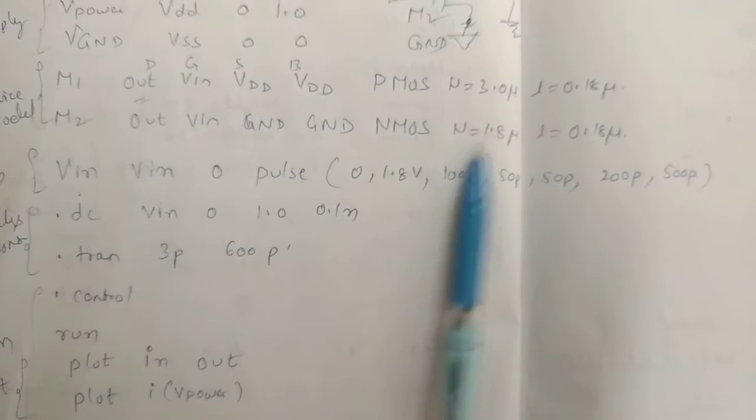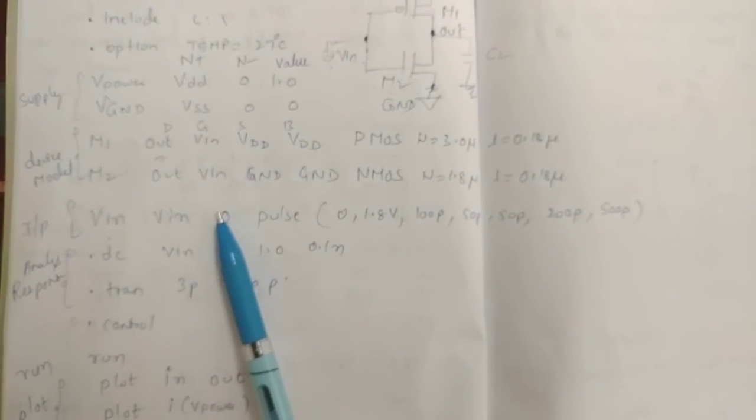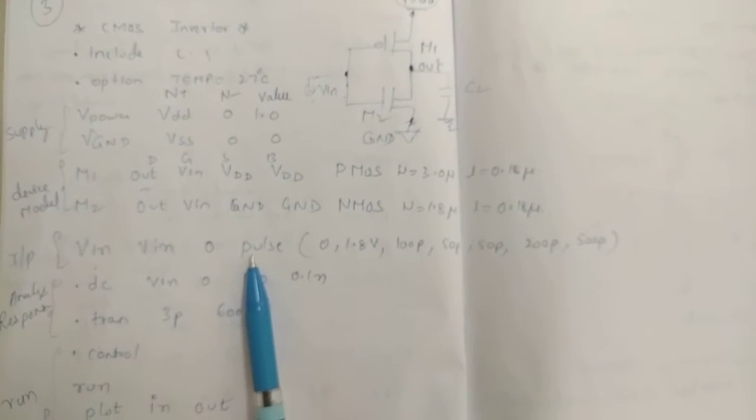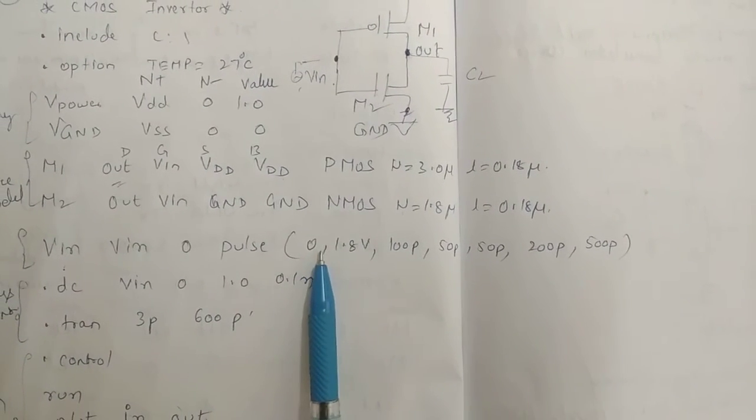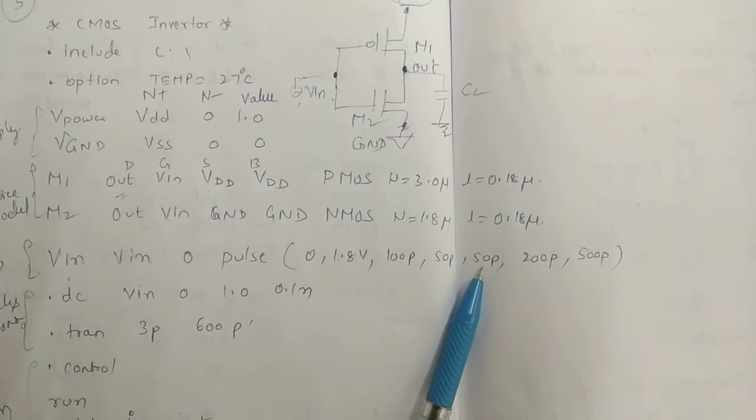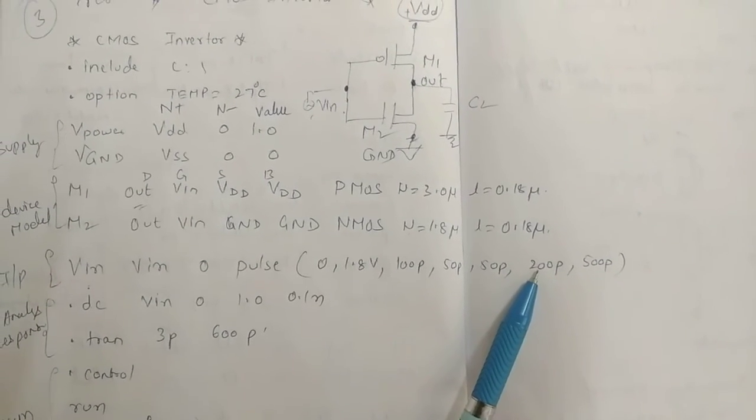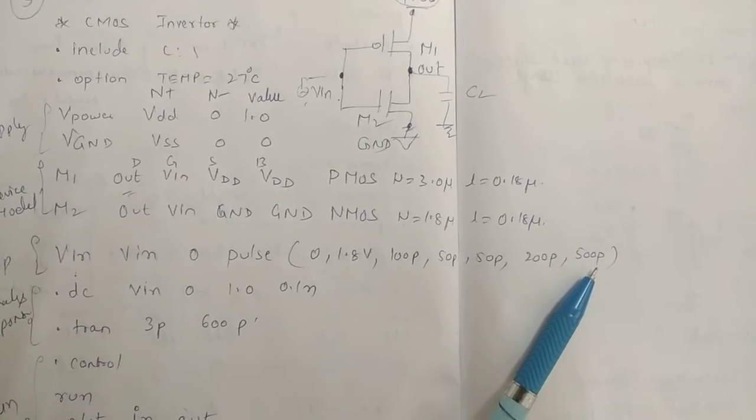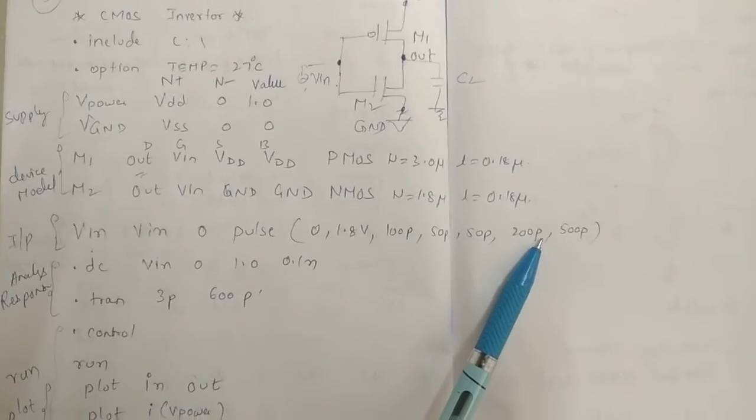Next, input VIN. How we will give it? VIN, VIN and 0. So this is connected between this and there. We are giving pulse because we want to give pulse. So what is the value of the pulse? Input voltage: 0, 1.2V, loop delay that is rise time, fall time, then the pulse total time period and width of the pulse.